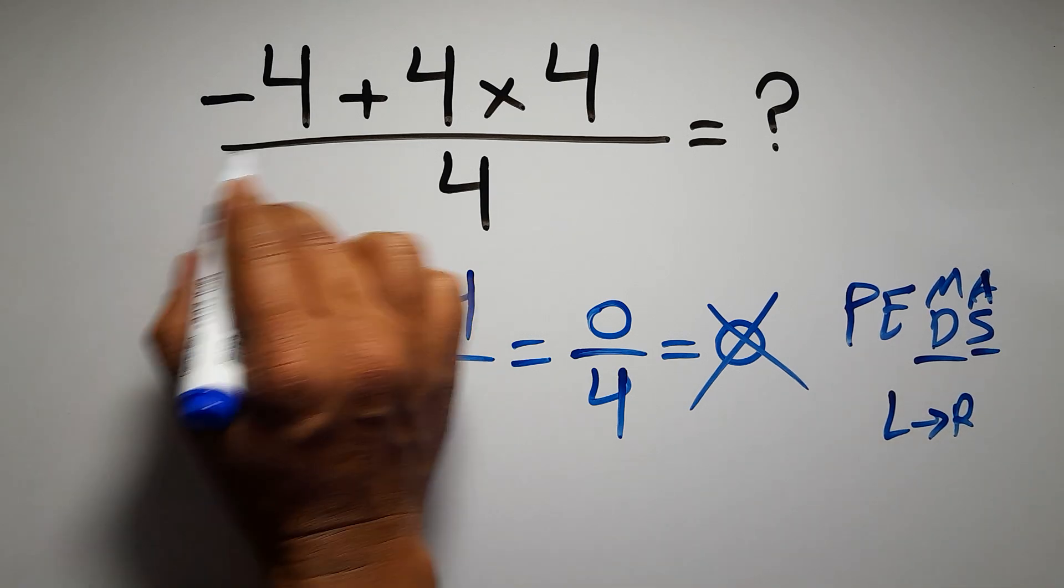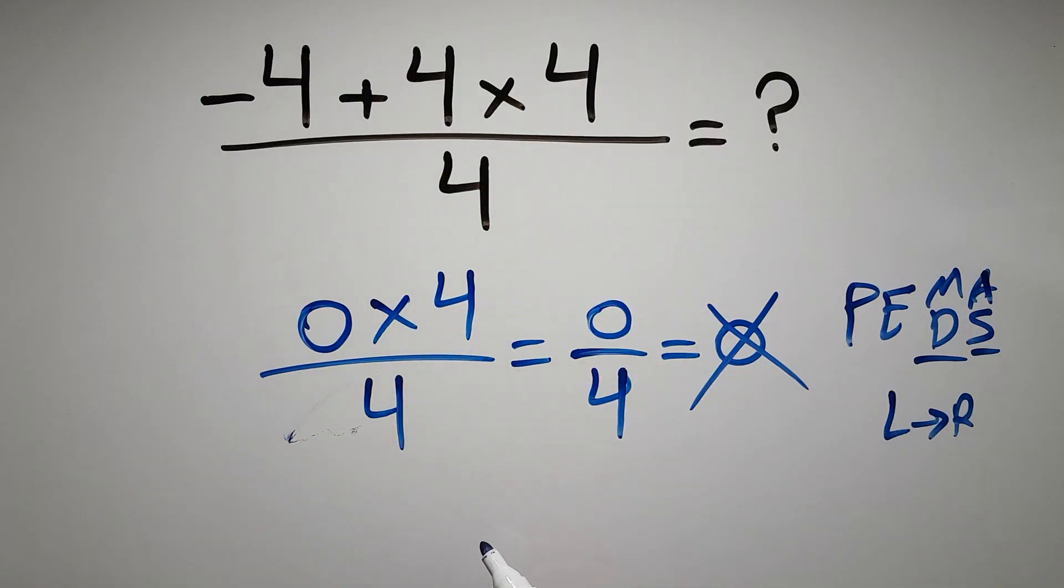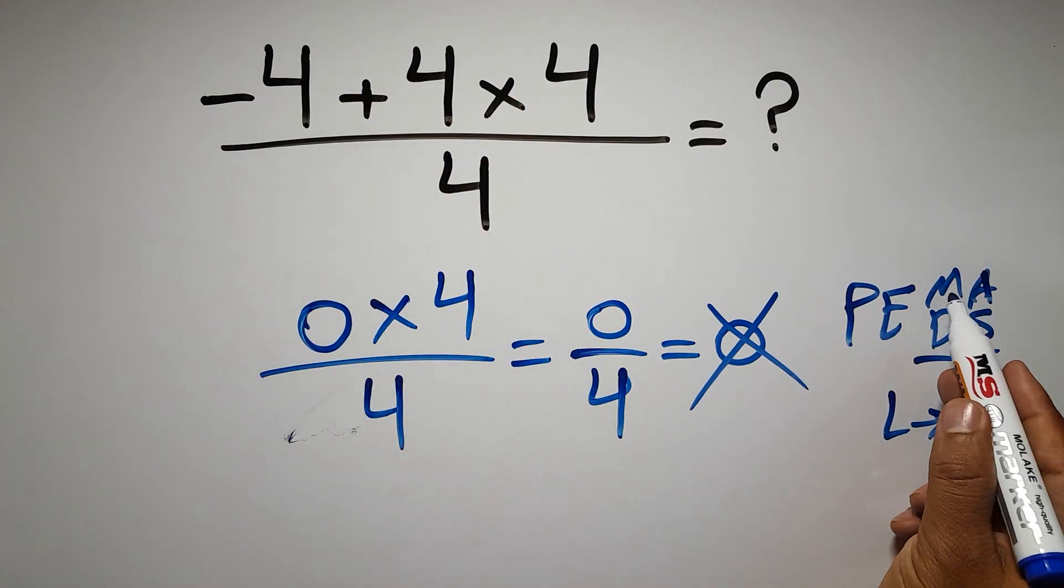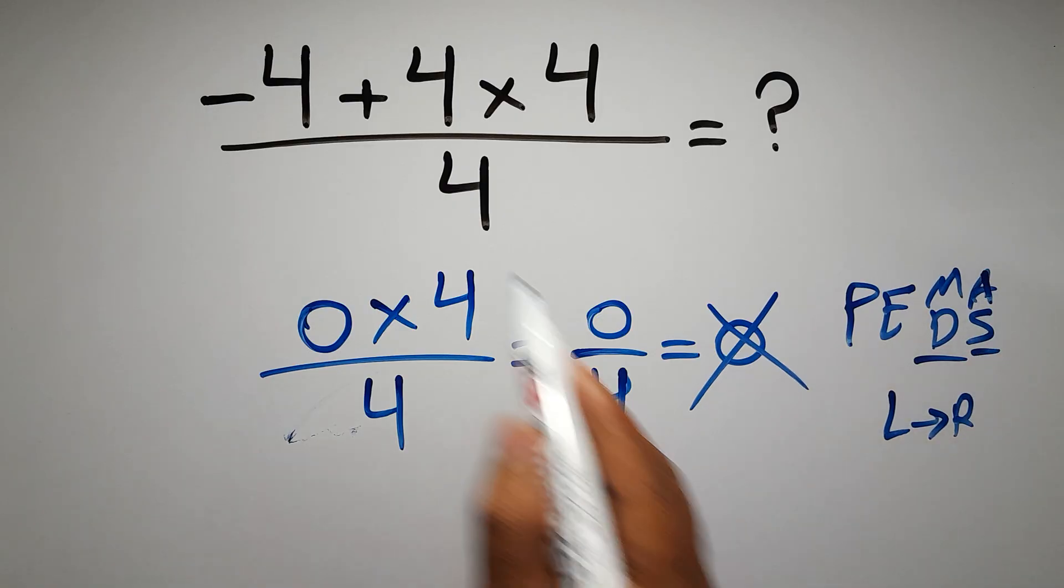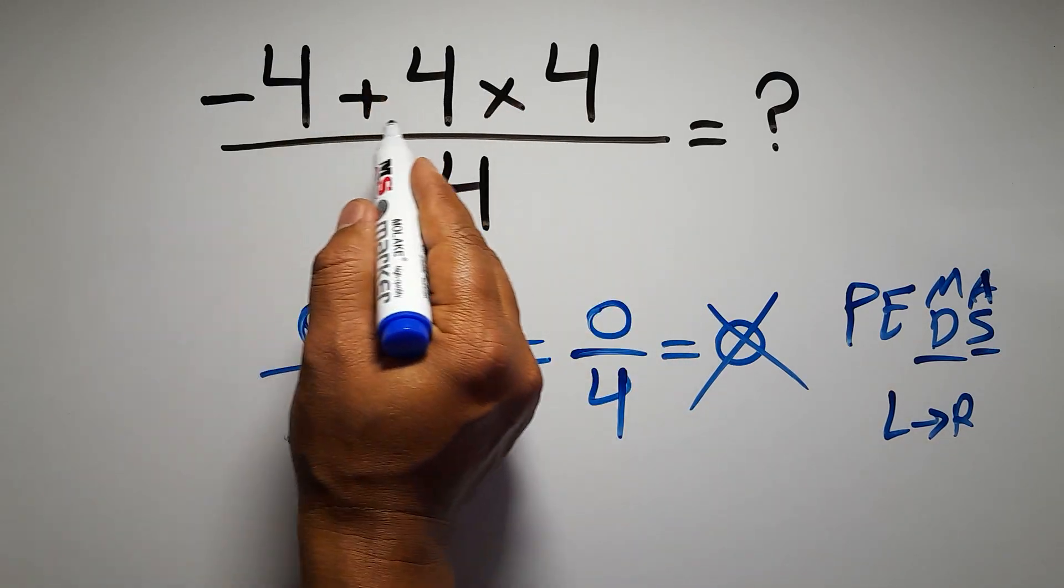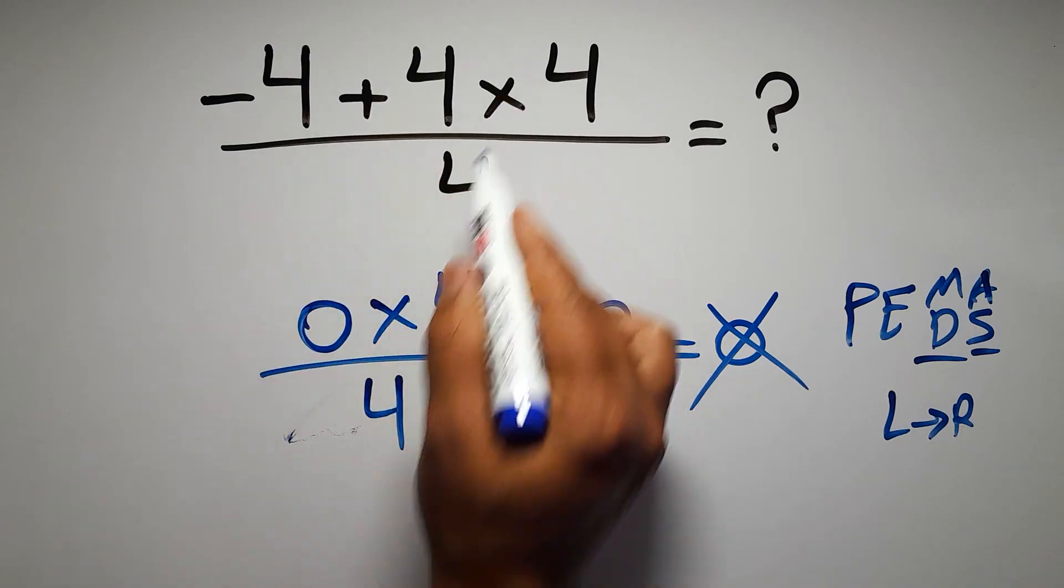Here in the numerator we have one addition and one multiplication. Multiplication has higher priority than addition. Multiplication comes before addition, so here first we have to do this multiplication, then this addition. If we do this addition before this multiplication, it is wrong.